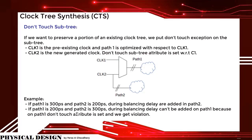Don't-touch subtree: if we want to preserve a portion of an existing clock tree, we put a don't-touch exception on the subtree. Clock 1 is the pre-existing clock and path 1 is optimized with respect to clock 1. Clock 2 is the new generated clock with don't-touch subtree attribute set with respect to clock 1. For example, if path 1 is 300 ps and path 2 is 200 ps, during balancing delay is added in path 2. But if path 1 is 200 ps and path 2 is 300 ps, delay can't be added on path 1 because of the don't-touch attribute, resulting in a violation.